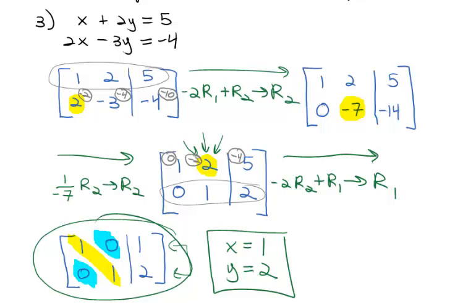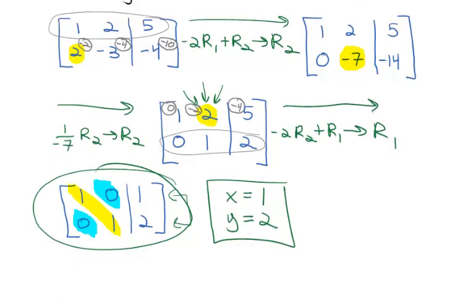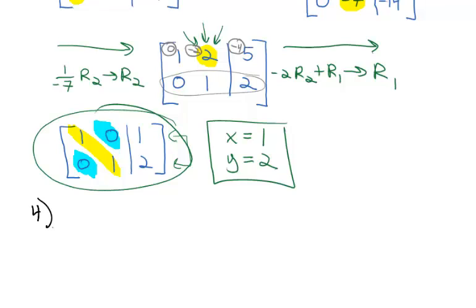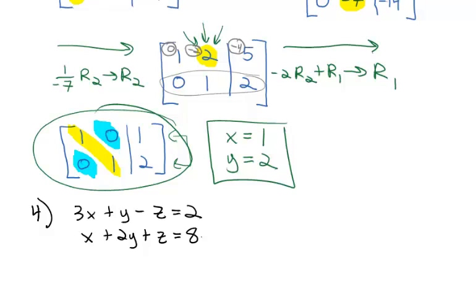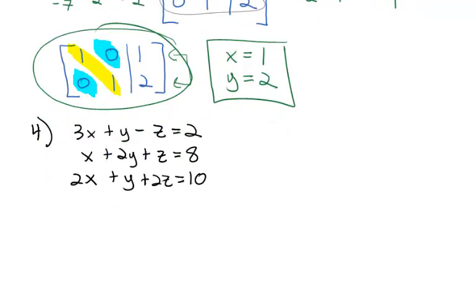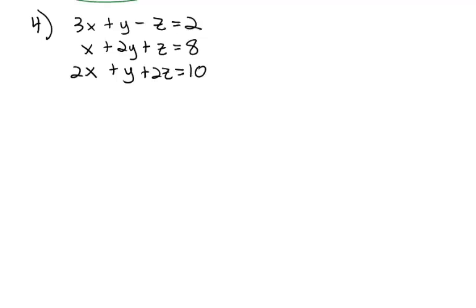This process is new and takes practice. Practice, practice, practice. Let's look at a few more examples. Next, we have the 3×3 system: 3x + y - z = 2, 2x + 2y + z = 8, and 2x + y + 2z = 10. We'll solve this by converting to a matrix and using reduced row echelon form.